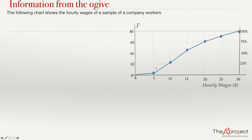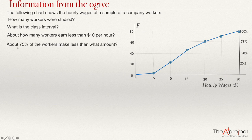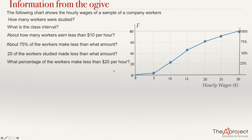With this information, we can answer some questions. The questions are: How many workers were studied? What is the class interval or width of the class? About how many workers earn less than $10 per hour? About 75% of the workers made less than what amount? 20% of the workers studied made less than what amount? And what percentage of the workers made less than $20 per hour? Most of these questions use 'less than' because this ogive represents the less-than cumulative frequency.